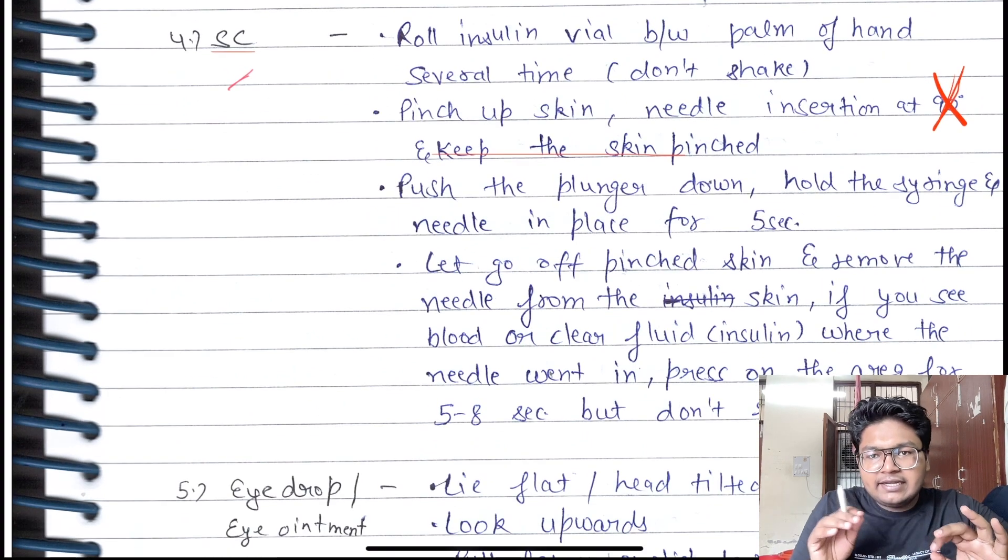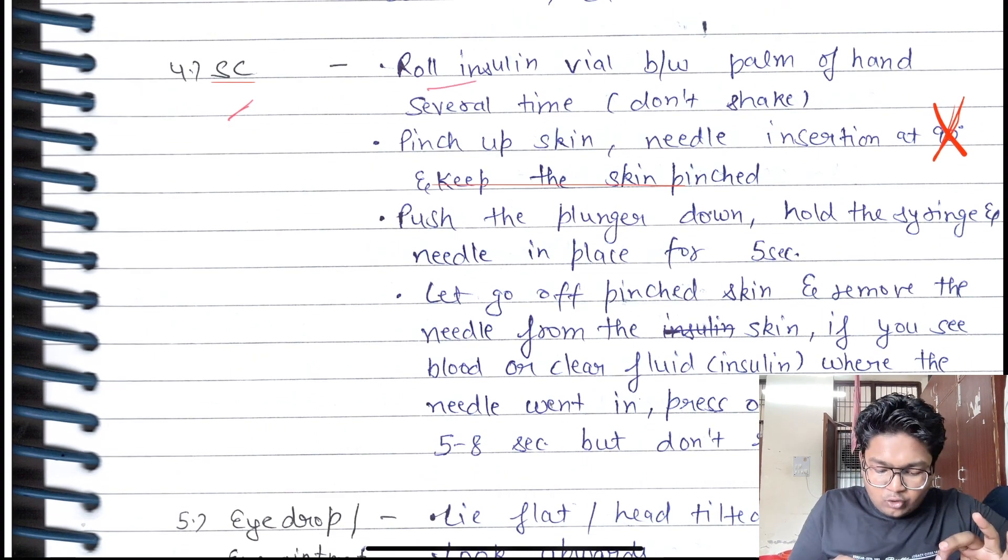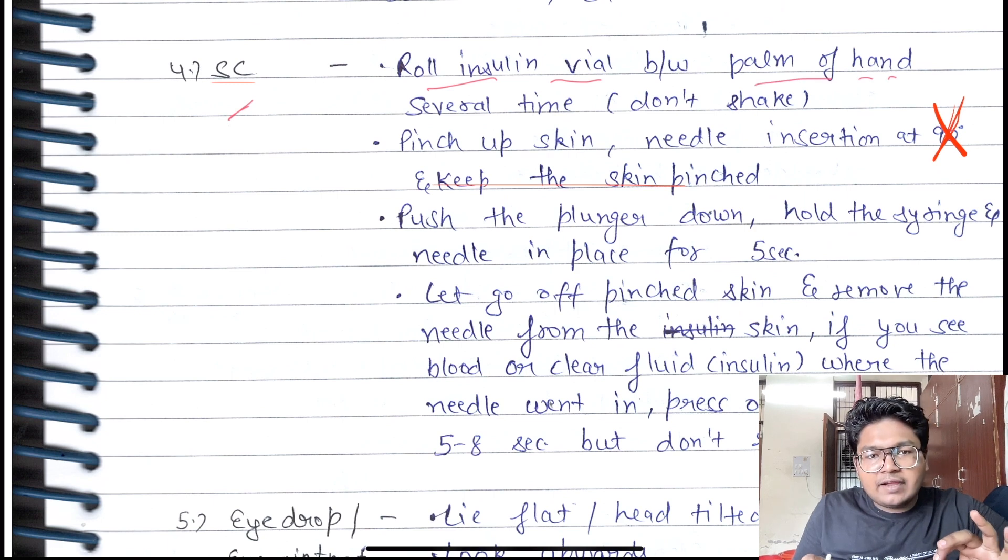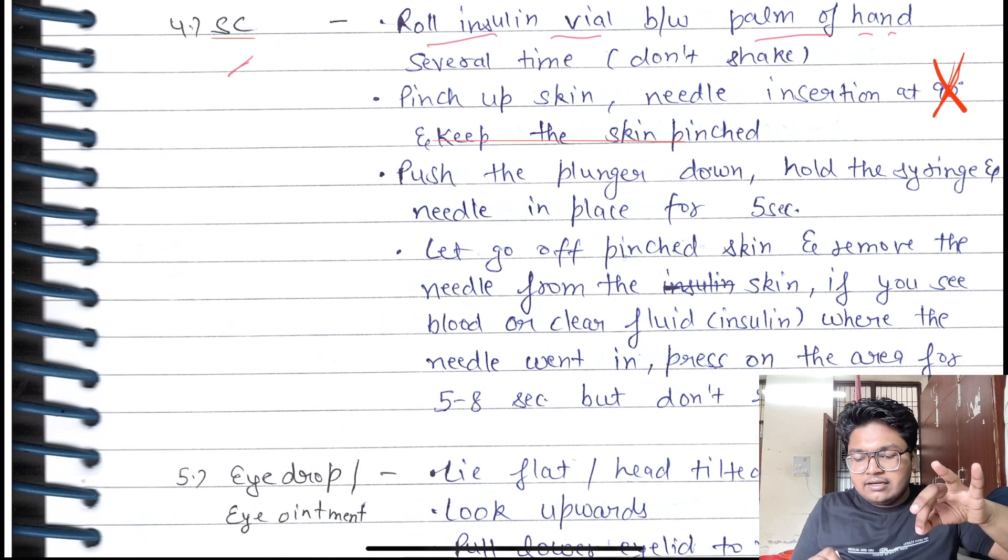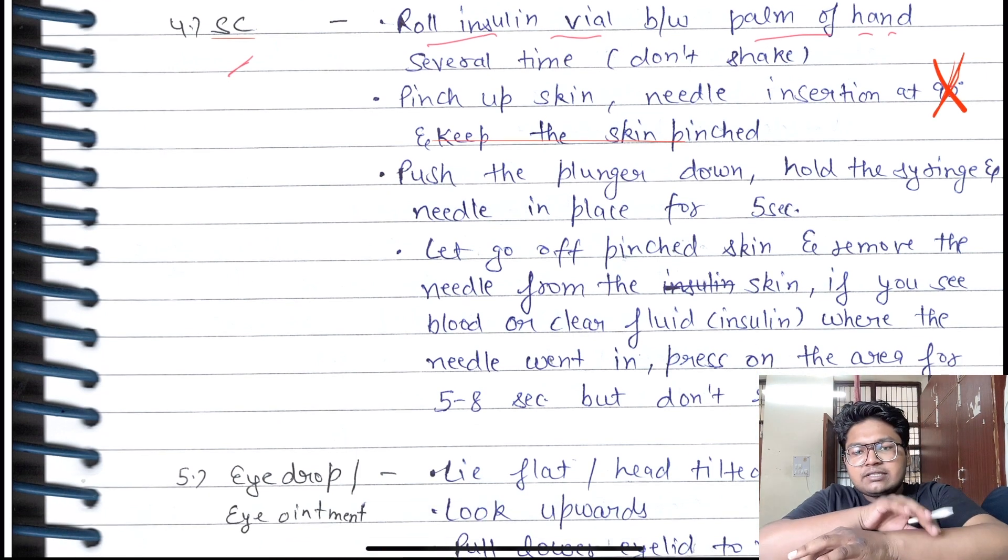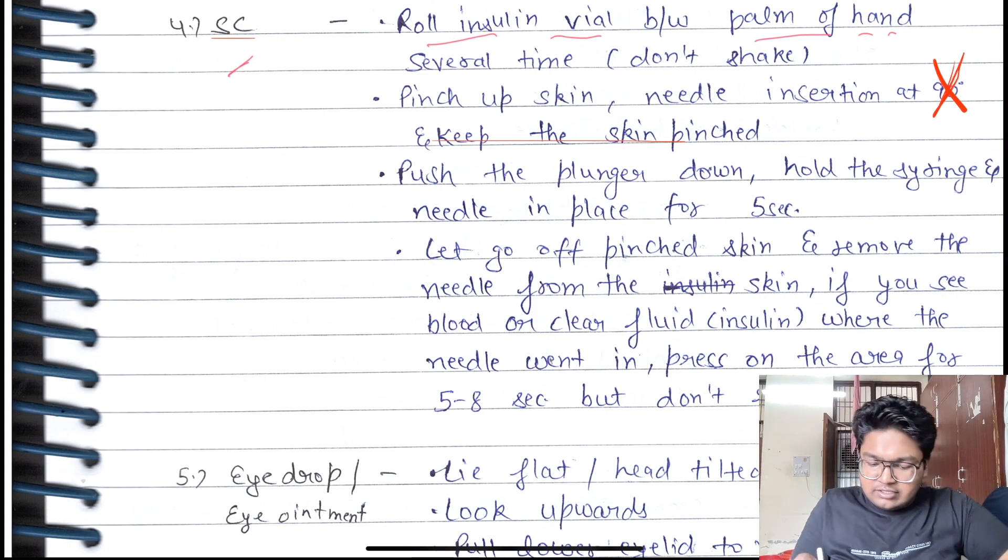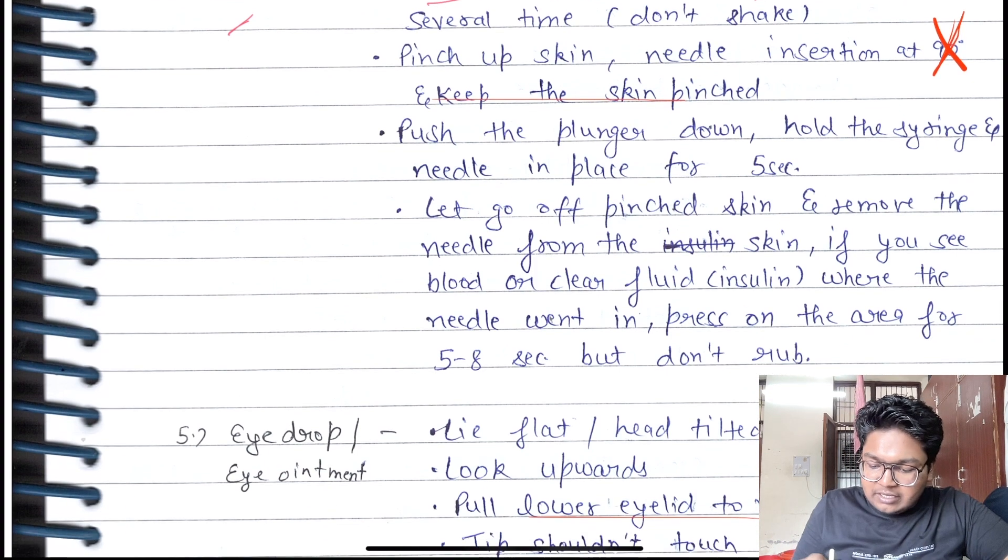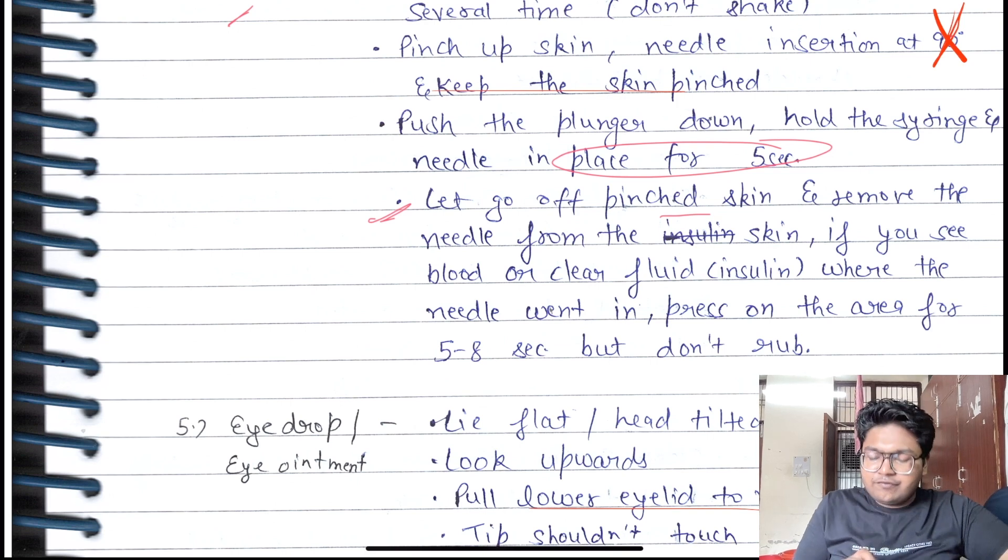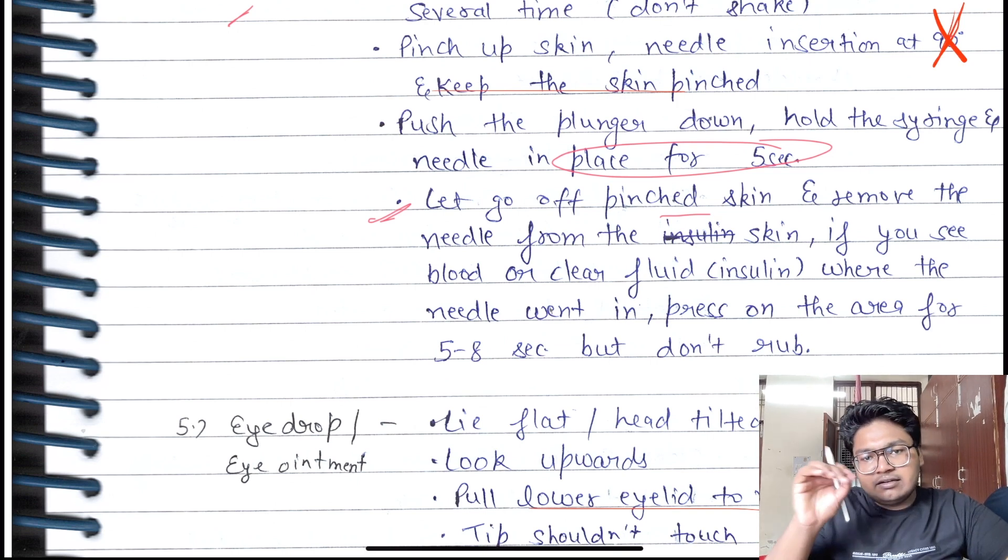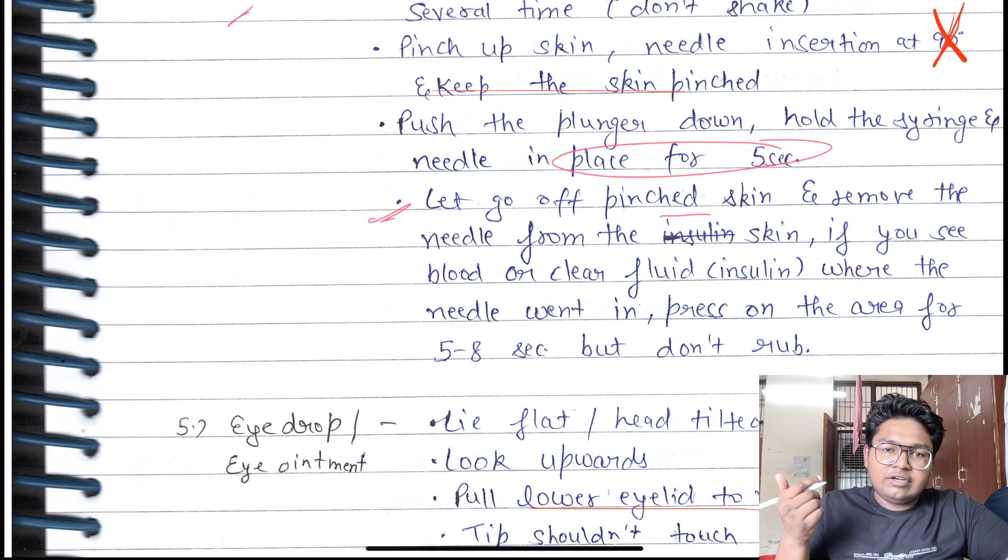Subcutaneous - we'll take the example of insulin. Roll insulin vial between palms several times, don't shake. Then pinch up the skin, insert the needle, push the plunger down, and hold the syringe and needle in place for five seconds. Let go of the pinched skin, then remove the needle slowly.